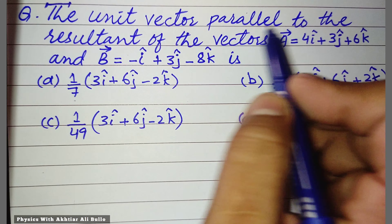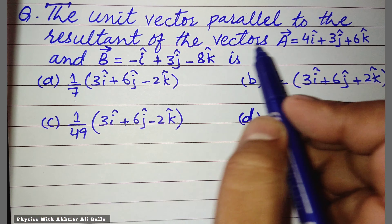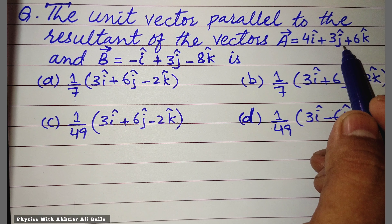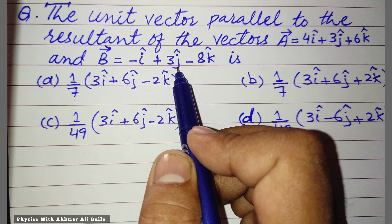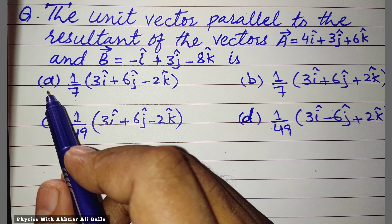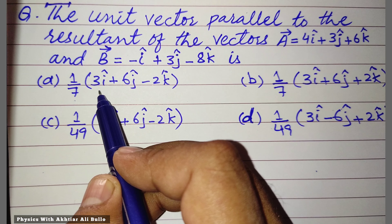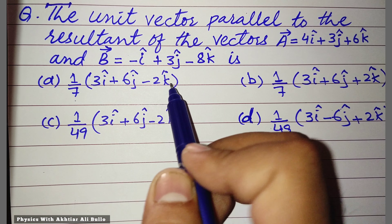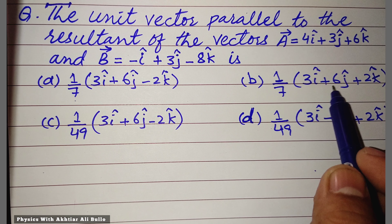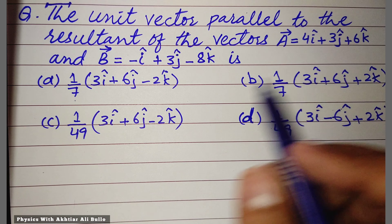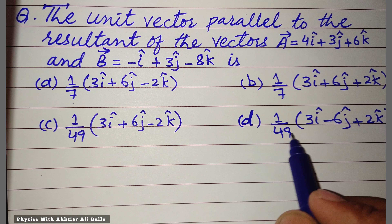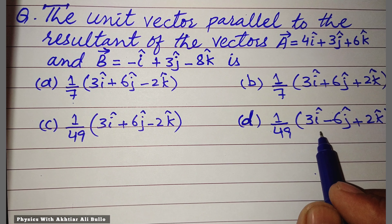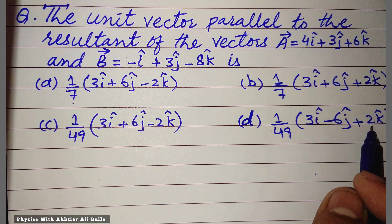Find the unit vectors parallel to the resultant of vectors a = 4i + 3j + 6k and b = -i + 3j - 8k. The options are: (a) 1/7 into (3i + 6j - 2k), (b) 1/7 into (3i + 6j + 2k), (c) 1/49 into (3i + 6j - 2k), (d) 1/49 into (3i - 6j + 2k). We have to find the unit vector parallel to the resultant of vectors a and b.